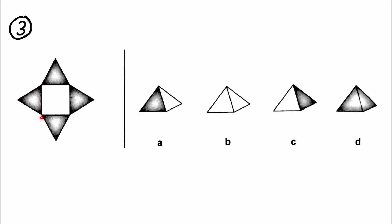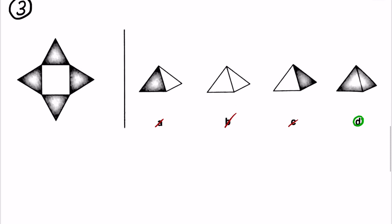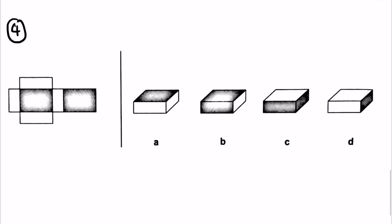Number three is very simple. We can clearly see that all the triangles are shaded in the original shape. In A, only one side of the triangle is shaded. In B, none of the sides of the triangle are shaded. In C, only one side of the triangle is shaded. In D, we can see all the sides of the triangle are shaded — so it's obviously going to be D.